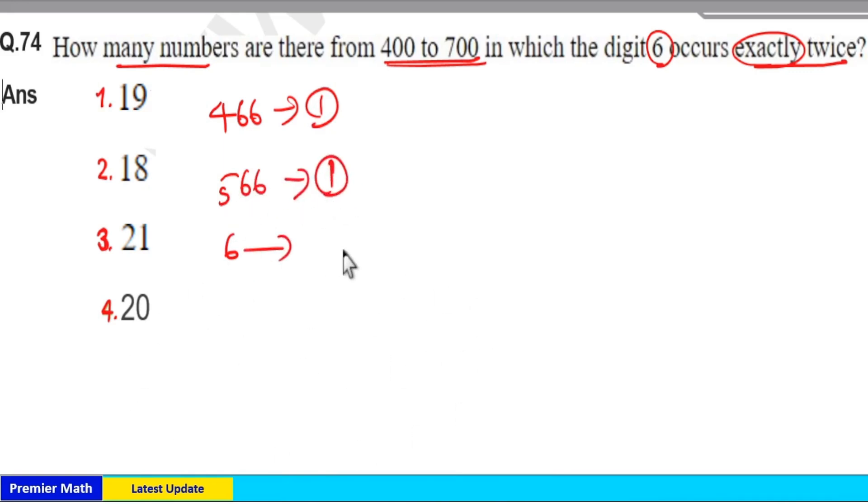Now if it starts with 6, many numbers are possible. Consider first two numbers are 6, then from 660 to 669. From 0 to 9, 10 numbers are possible but we should eliminate 666, which means only 9 numbers are possible.